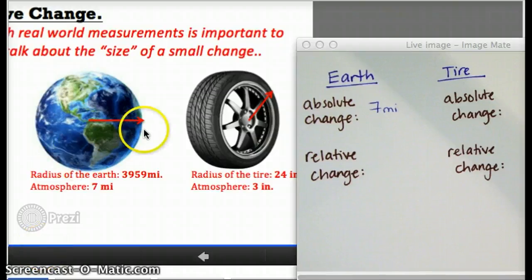And again, that's just the numerical difference. How much bigger is the earth with the atmosphere than without it? The relative change we would get by dividing the numerical change by the size of the earth in the beginning.